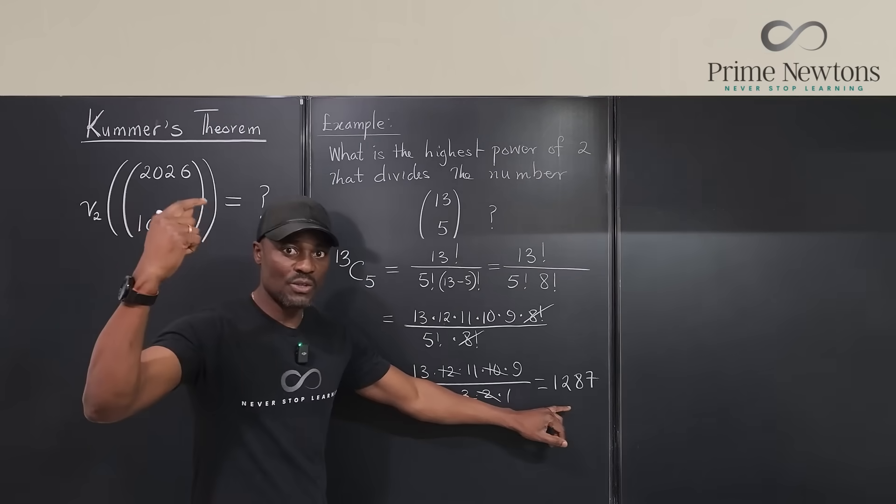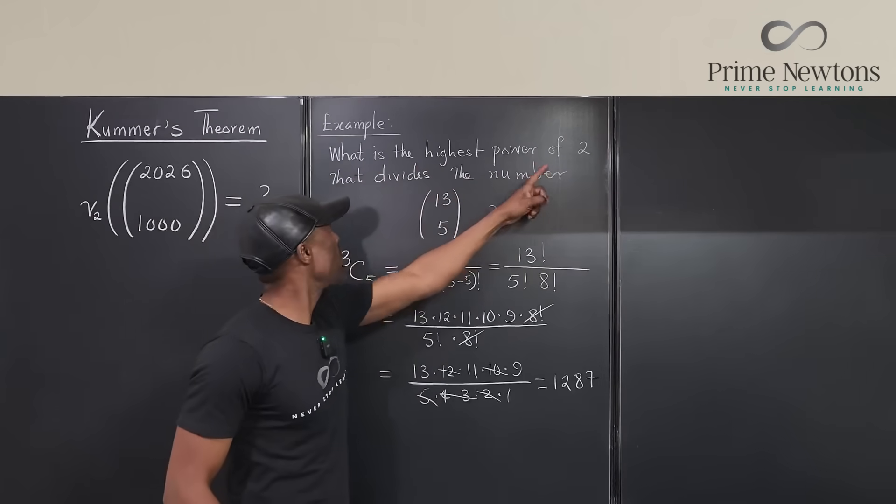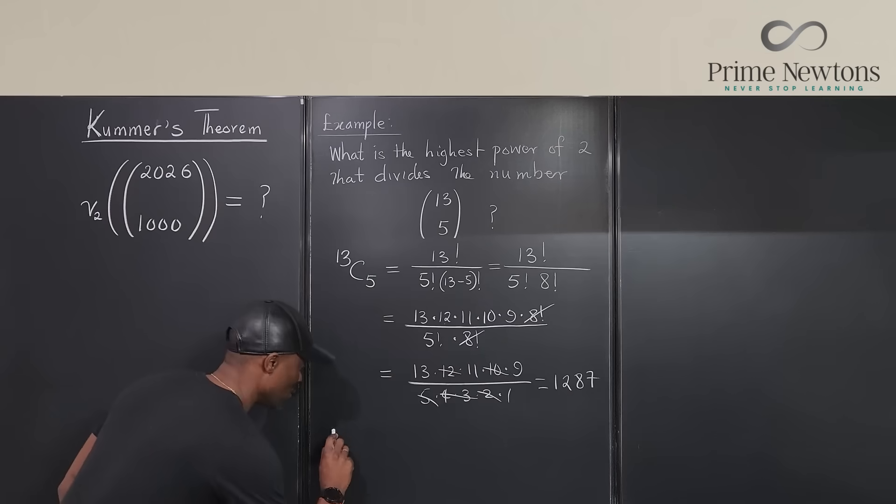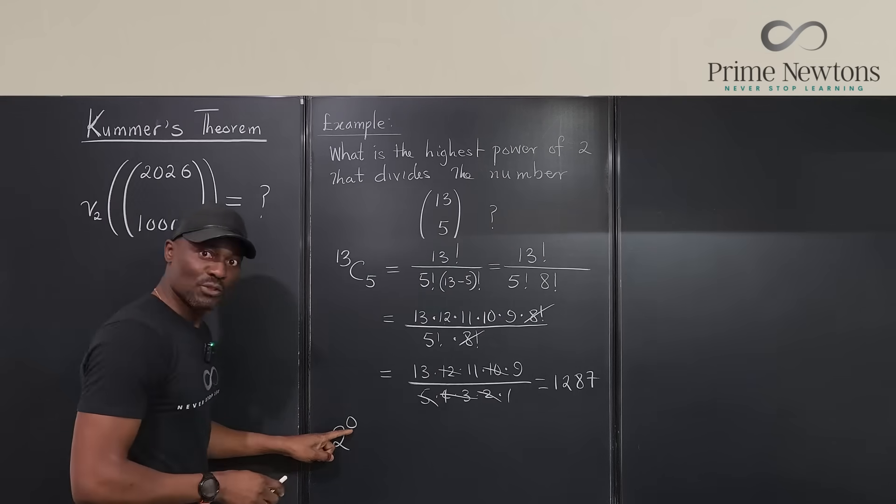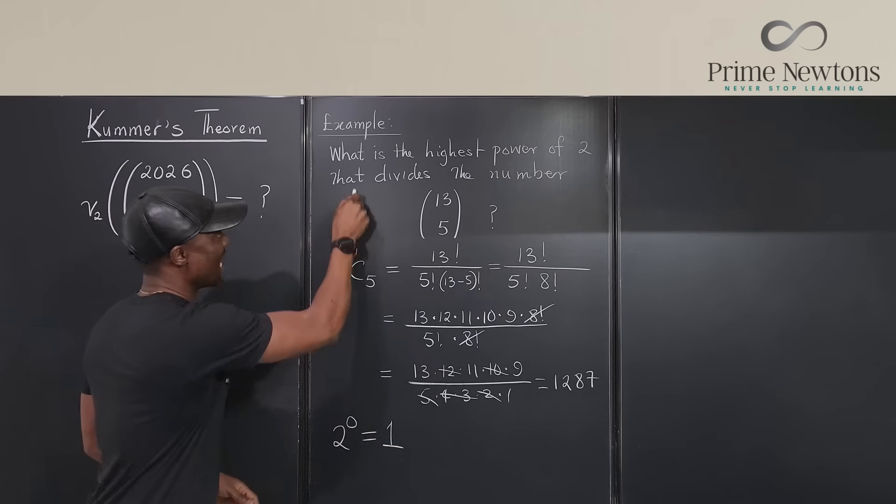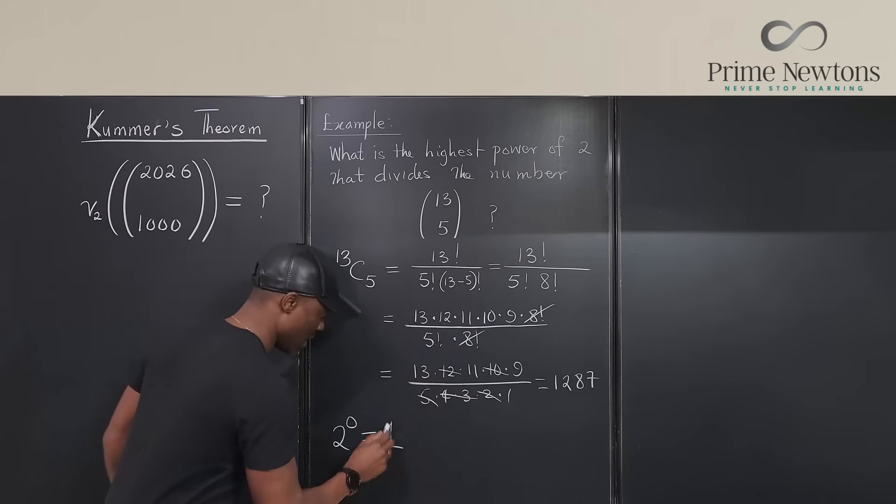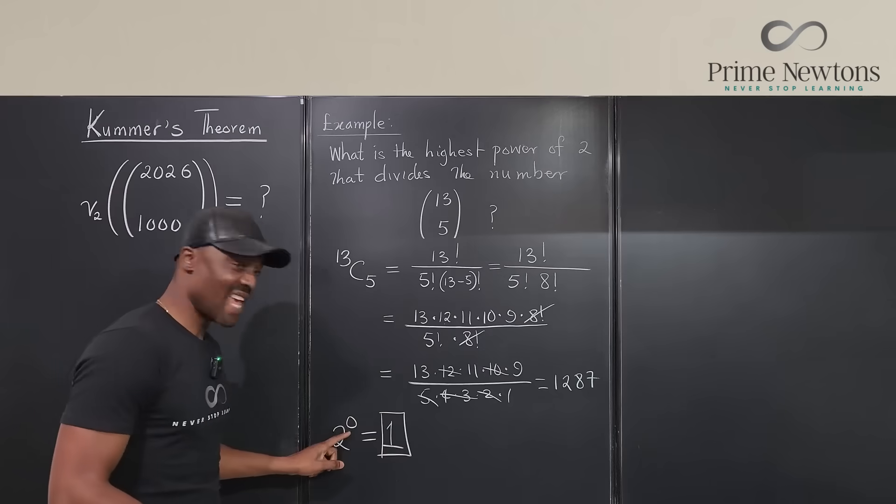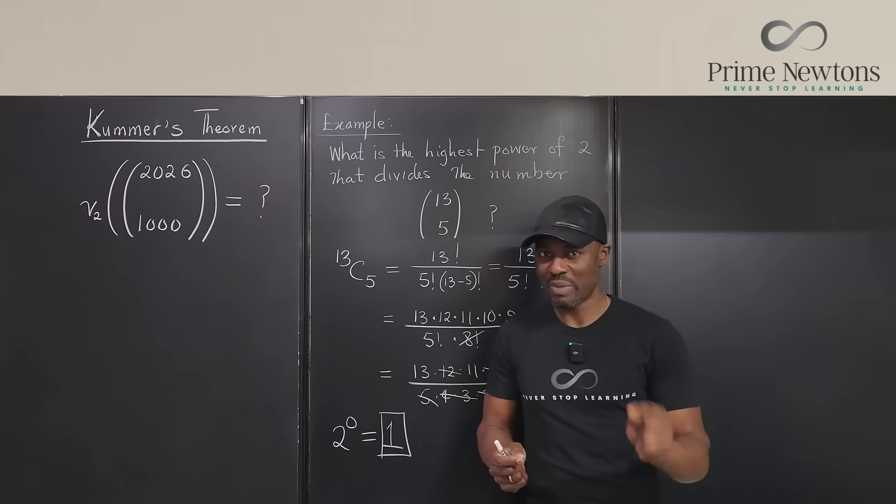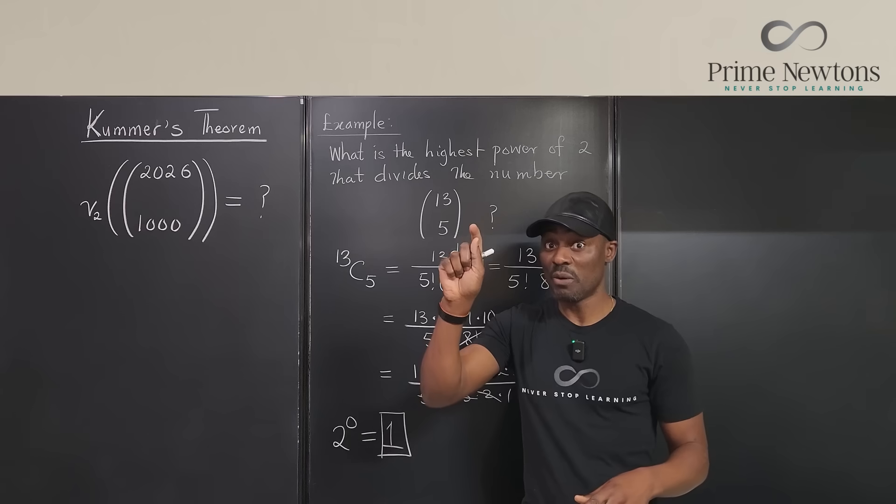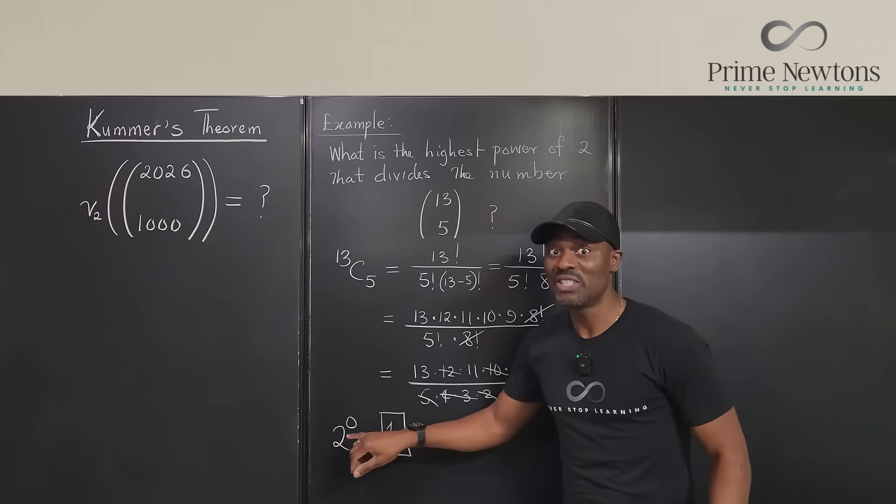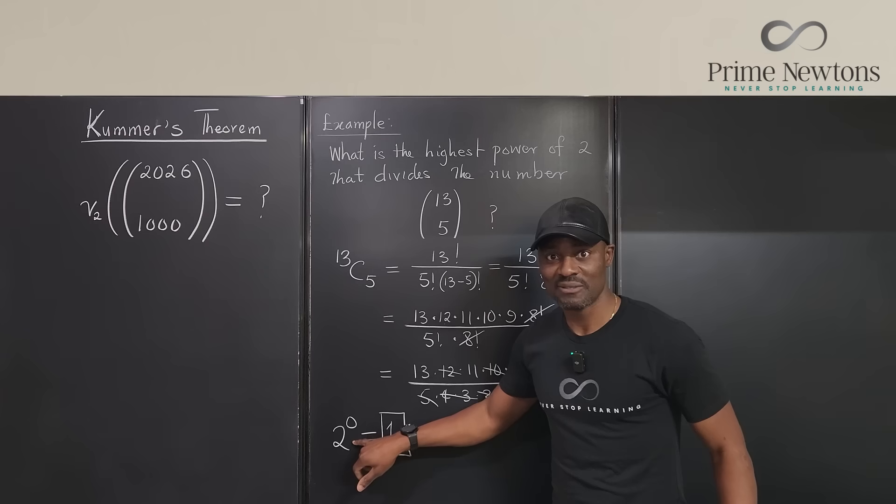Now remember what the original question was. What is the highest power of 2 that divides the number? What's the highest power of 2? This is not divisible by 2. 2 raised to power 0, the exponent on 2 has to be 0 because there is no 2 that divides this, which is equal to 1. That is the answer to this question. The highest power of 2 is 1. Remember, 0 is the exponent on 2.